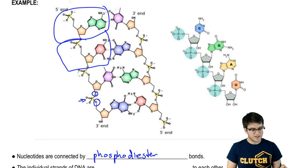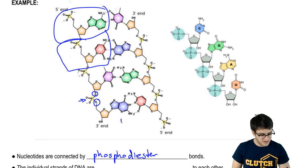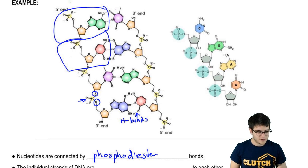Now, getting back to the nitrogenous bases, we can see that the nitrogenous bases are attaching the two strands of DNA, and they attach from hydrogen bonds.